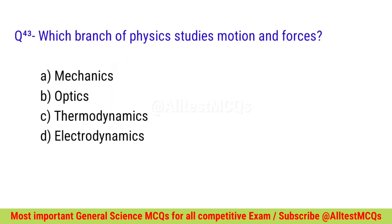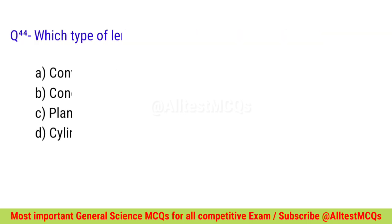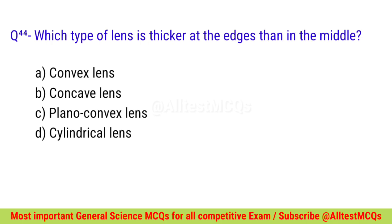Question number forty-three: Which branch of physics studies motion and forces? Correct option is A — Mechanics. Question number forty-four: Which type of lens is thicker at the edge than in the middle? Correct option is B — Concave lens.